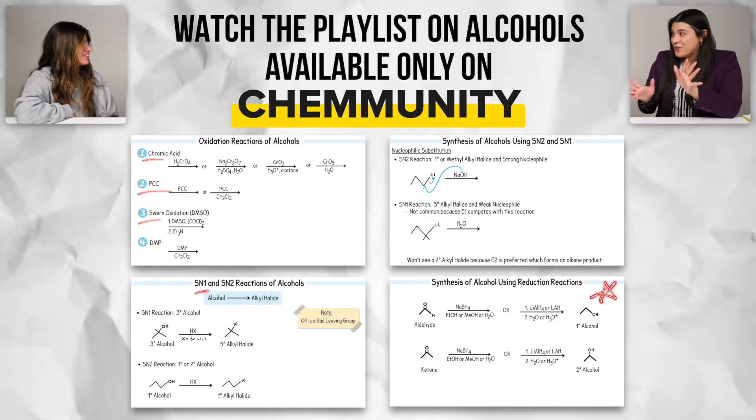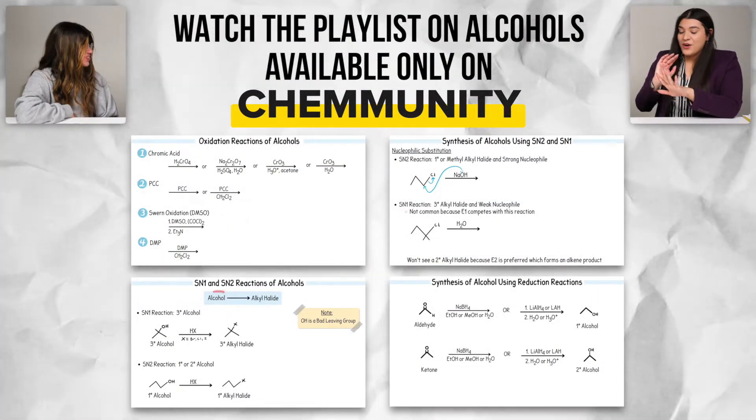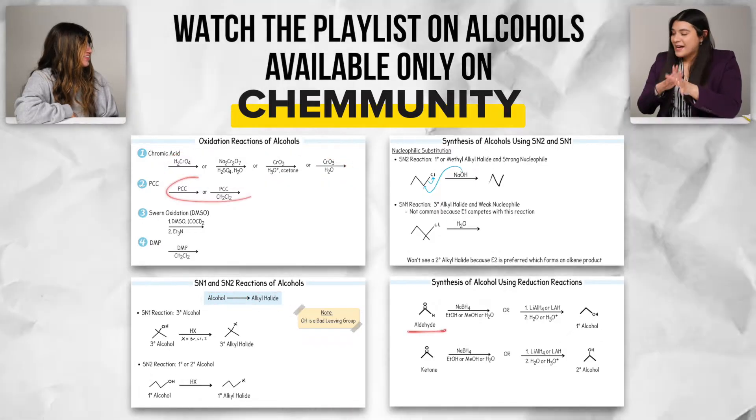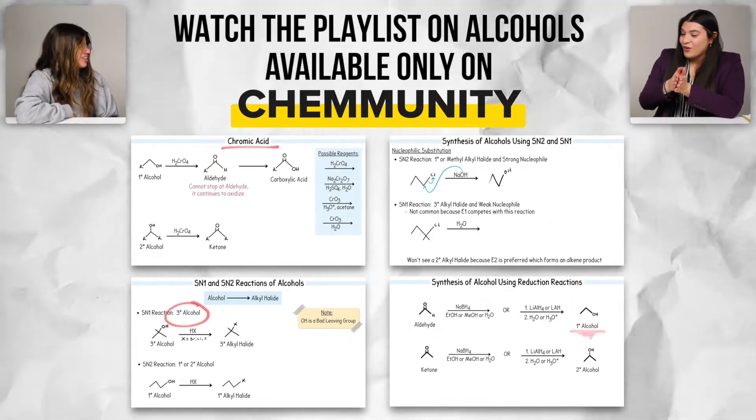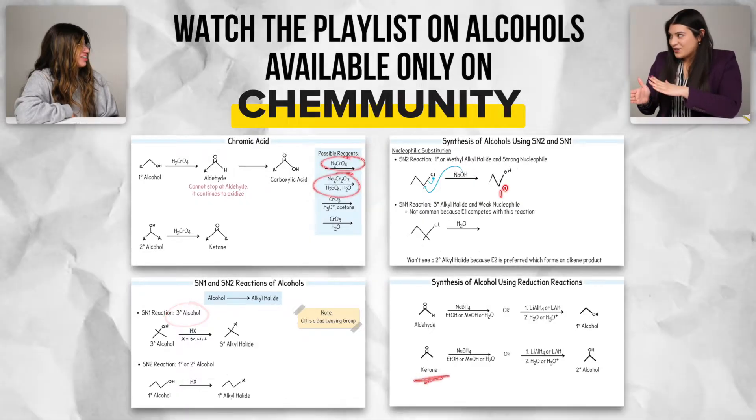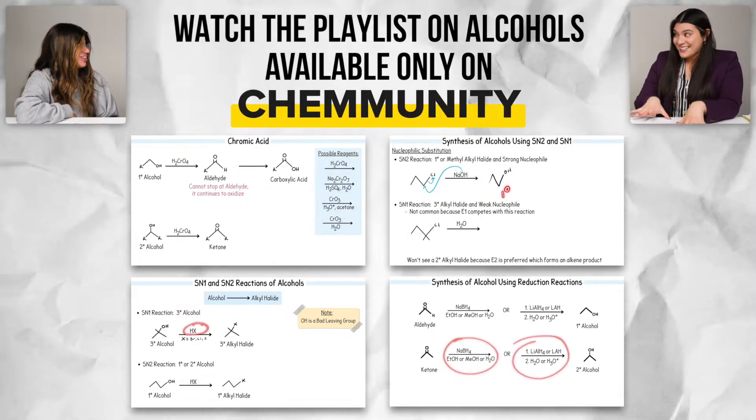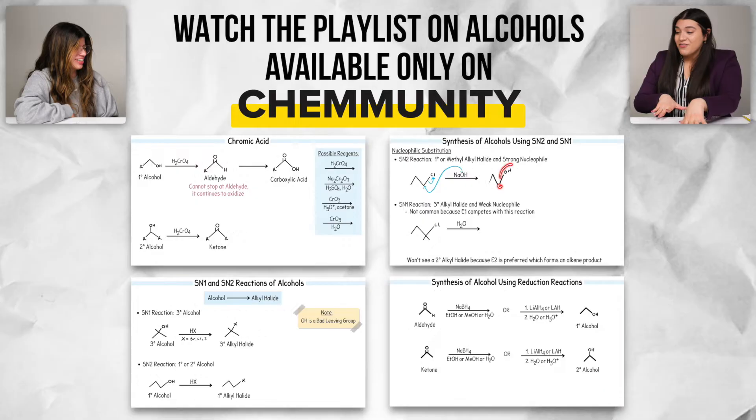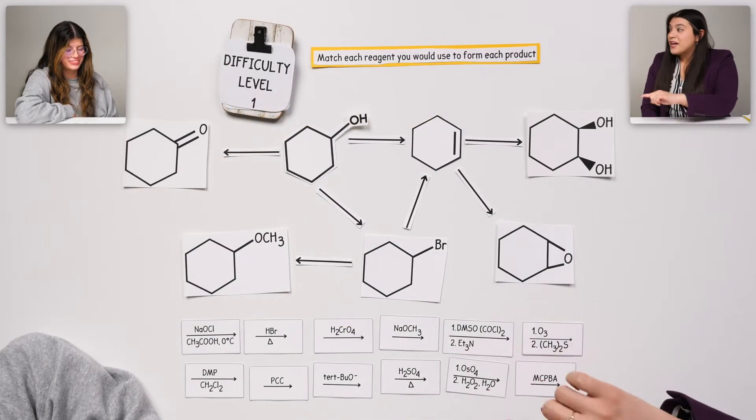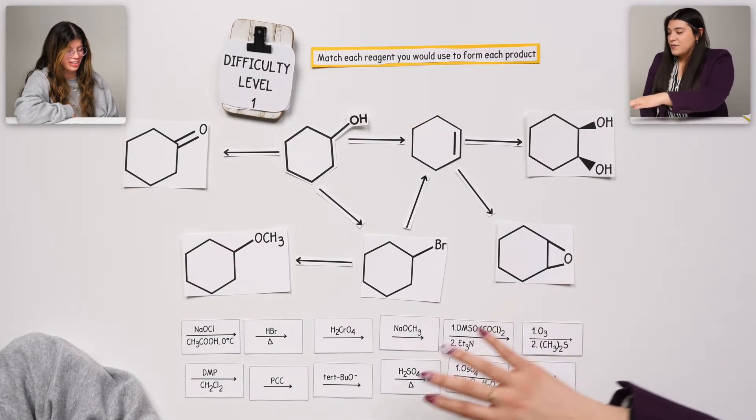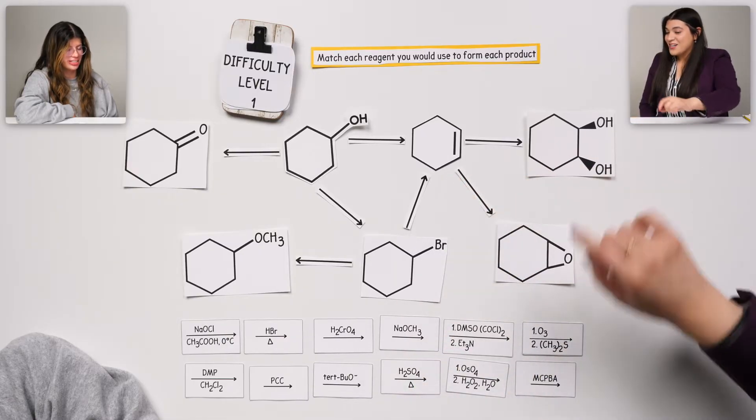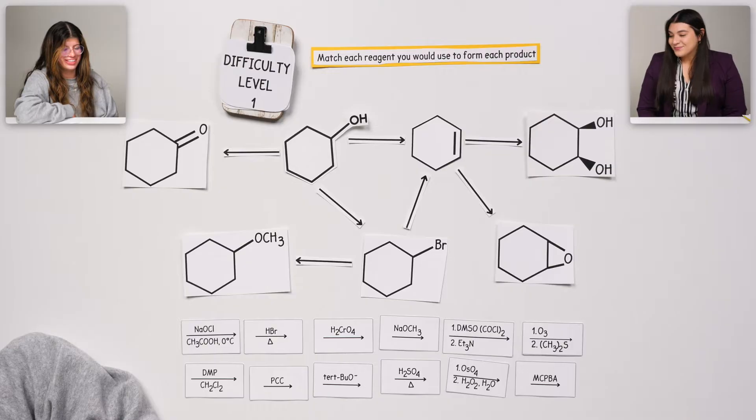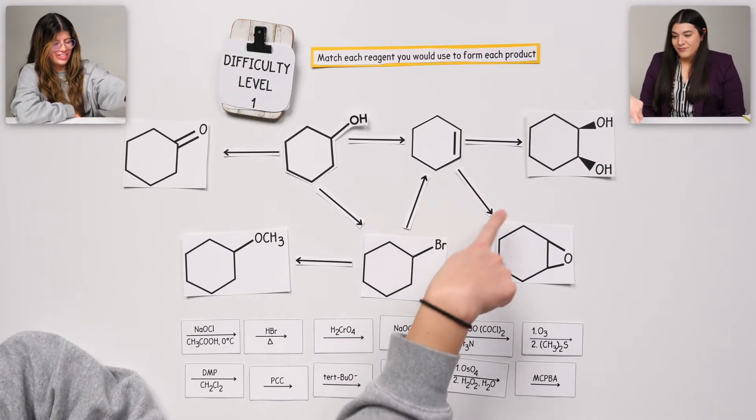On Community, you watched the entire category on alcohols that went over all of the reactions, mechanisms, any sort of tricks that you need to watch out for on alcohols, plus all of the synthesis questions that will come back today. So let's dive right in. This is going to be perfect for your upcoming exam and your final. We're just going to match every single reagent that goes to form each product. Where do you want to start? I'm going to start with this one because I know there's these two that come off of it.